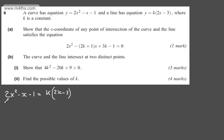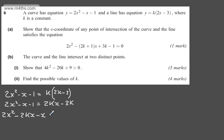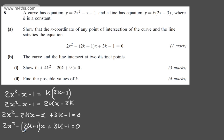Expanding the right-hand side: 2x squared minus x minus 1 equals 2kx minus 3k. Subtracting 2kx from both sides and adding 3k to both sides gives 2x squared minus 2kx minus x plus 3k minus 1 equals 0. Factoring the terms in x, we get 2x squared minus the quantity 2k plus 1 times x plus 3k minus 1 equals 0, as required.